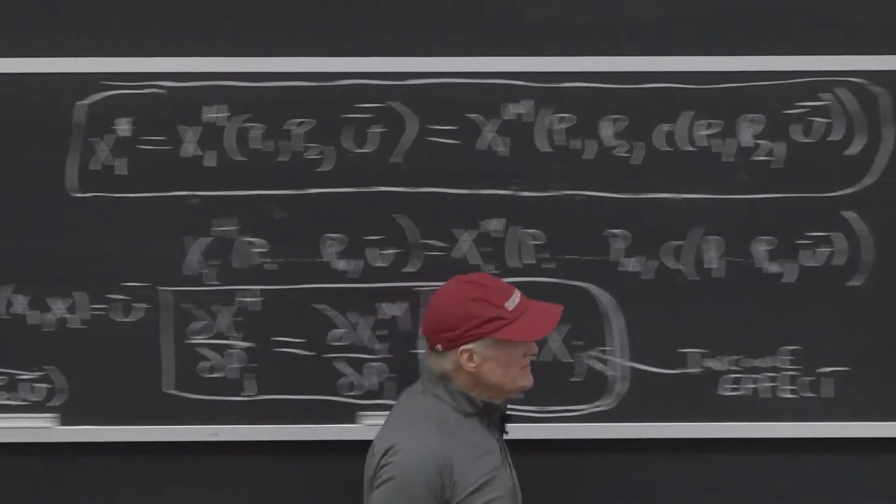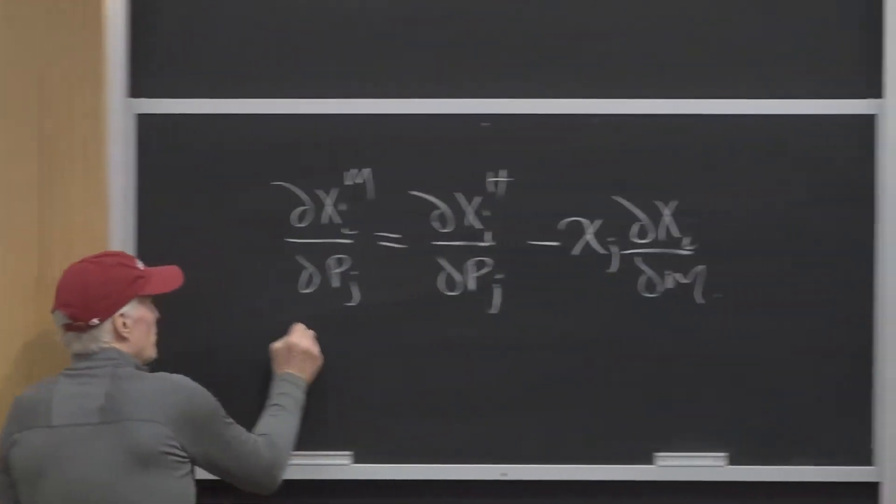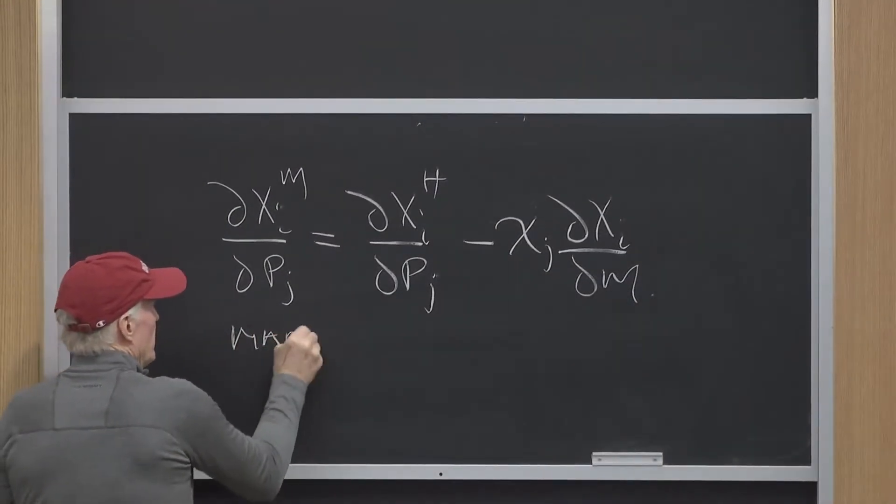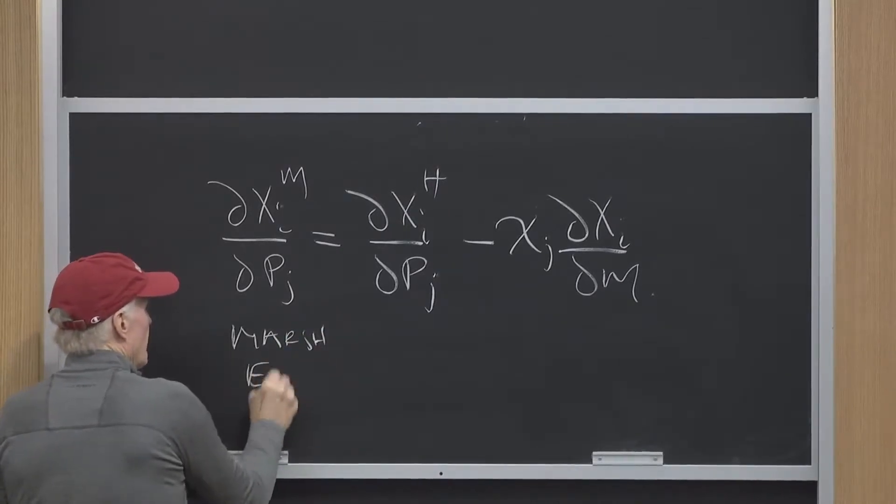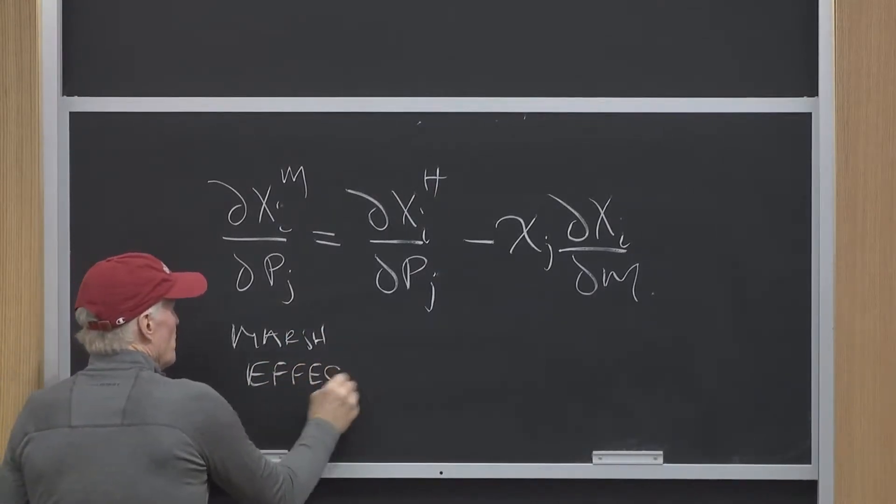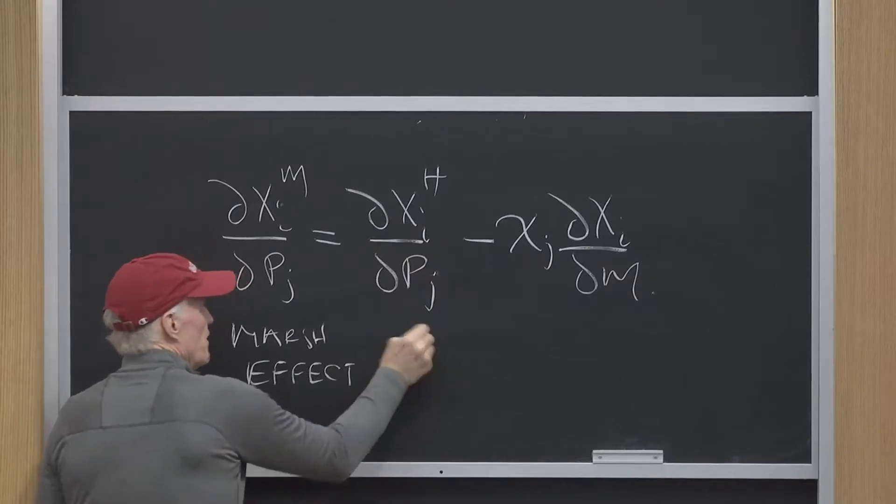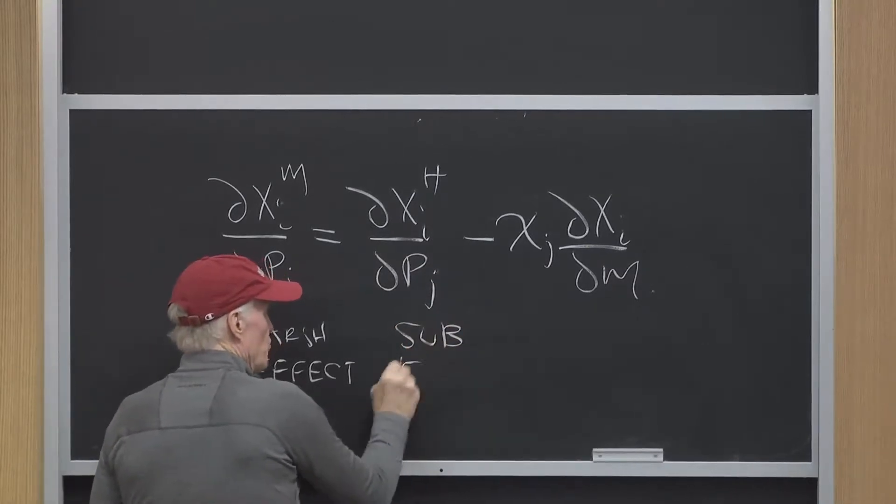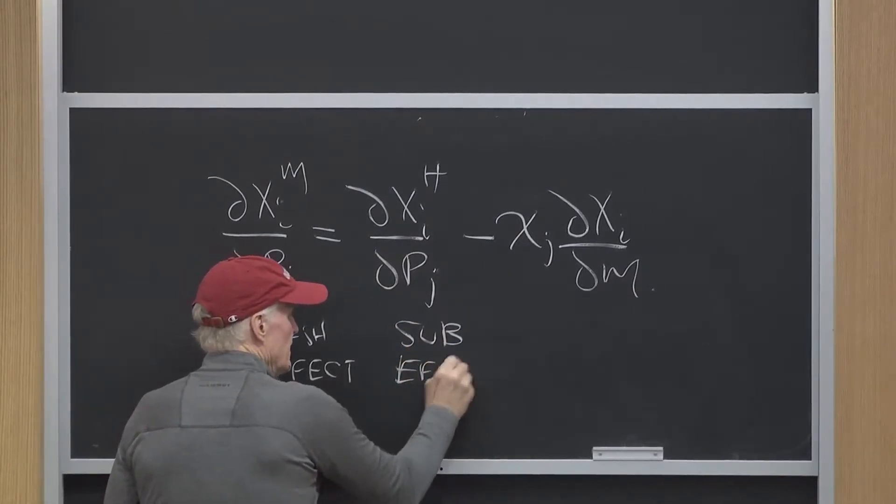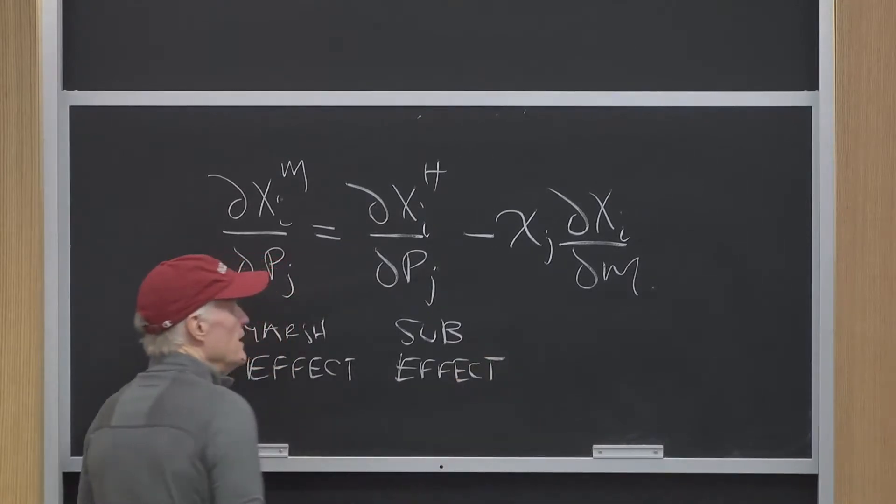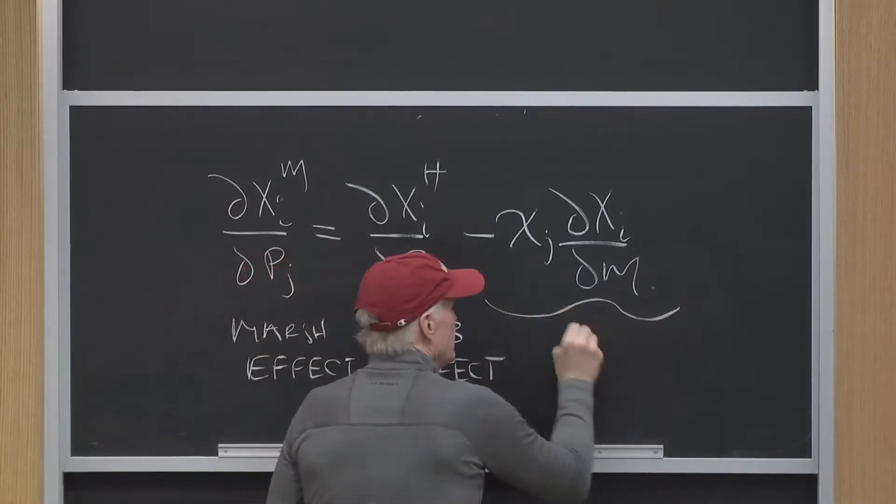And it says, this is what we call the Marshallian effect, is what we would call the Hicksian effect, which we often call the substitution effect, that is holding income constant. How would this person respond? And this is what we call the income effect.